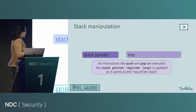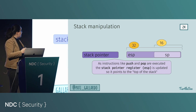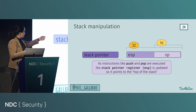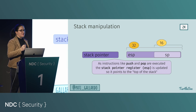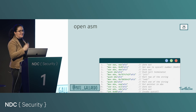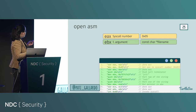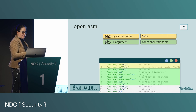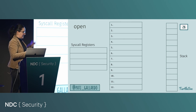The stack pointer also has different names: esp on 32-bit, rsp on x86-64. For the open assembly: the first two lines fill eax with the syscall number 5, then we handle the filename string, then xor ecx and edx to zero them, then int 0x80 for the syscall.